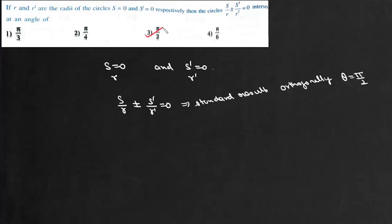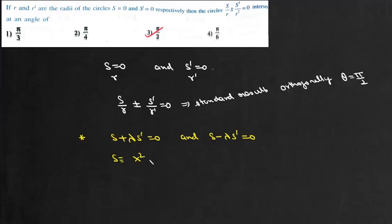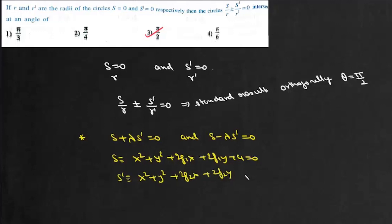One way of proving this: consider two circles S + λS' = 0 and S - λS' = 0, where S is x² + y² + 2G₁x + 2F₁y + C₁ = 0 and S' is x² + y² + 2G₂x + 2F₂y + C₂ = 0.